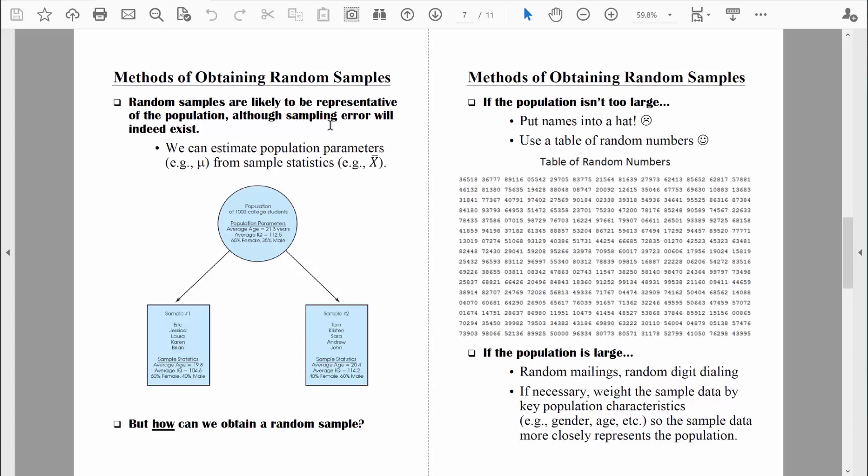What that means is that our sample statistics are unlikely to match our population parameters perfectly. But if our sample statistics come from random samples, we should be able to estimate population parameters from those sample statistics pretty accurately.